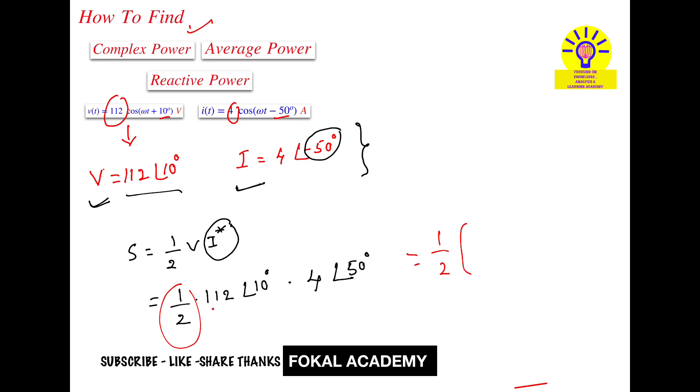That is 10 plus 50. Here, the twos cancel and it becomes 224∠60°.